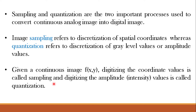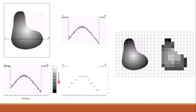Spatial resolution means how many samples you are taking and resolving into finer details, and quantization resolution means the intensity or gray level resolution. Say this is the object which we want to scan and digitize for digital image processing. We need to do sampling and quantization along the line A-B of this particular image. The one-dimensional function shown in this figure is a plot of amplitude or gray level values of the continuous image along the line segment A-B.